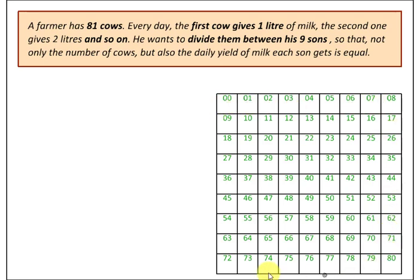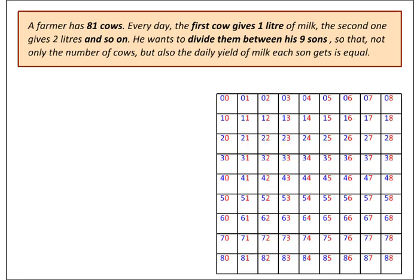We are going to take these numbers and convert them to base-9. Looking at the last cow, the one that gives 80 litres of milk, it is represented by base-9 number 88. Had it been 81 litres, our number would have become 100, because after 88 there are no 9s — the next number is 100 in base 9. That would have given us a 3-digit number.